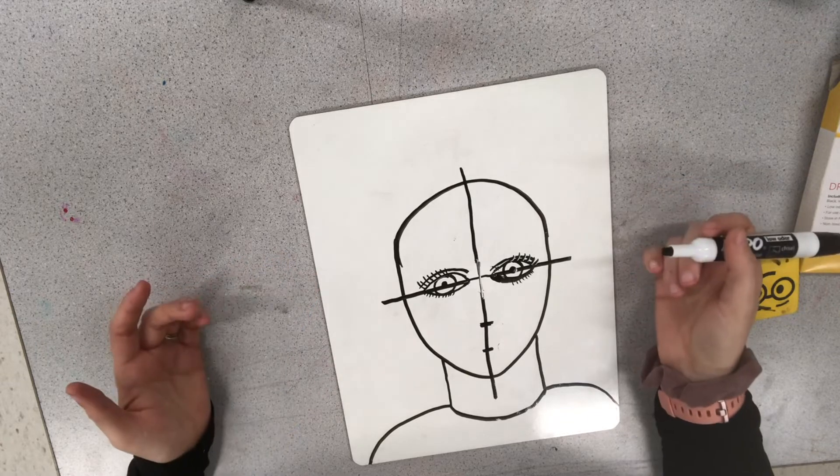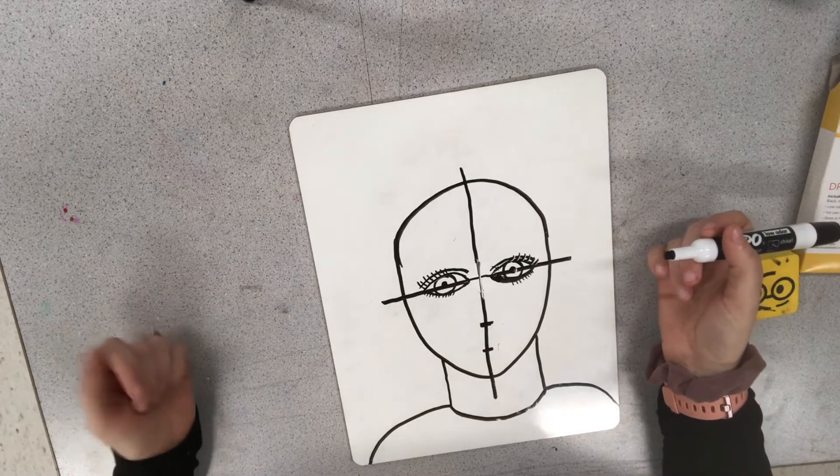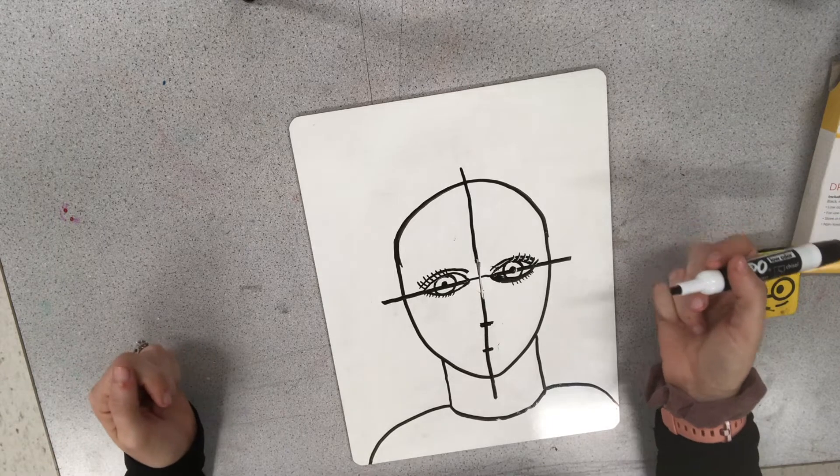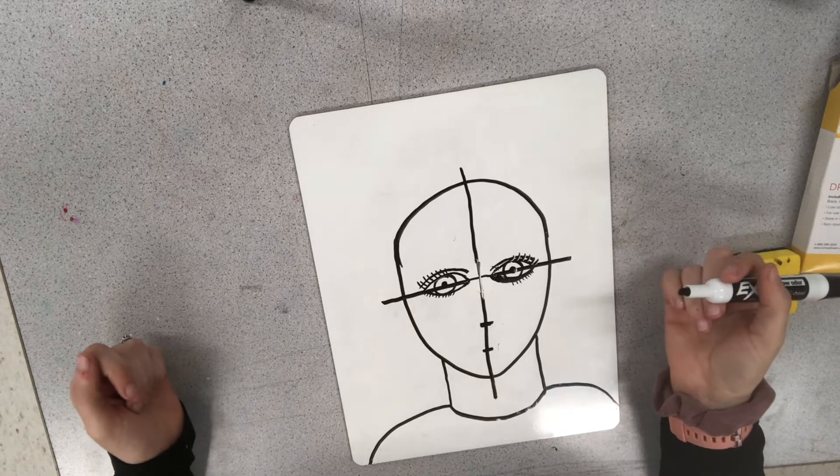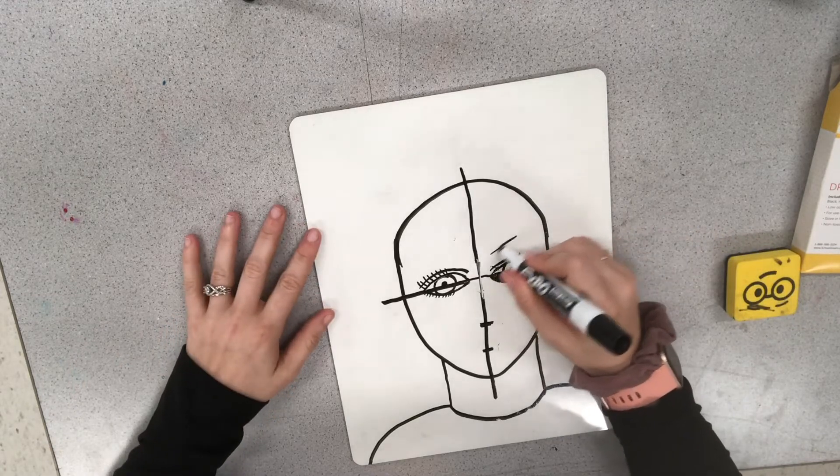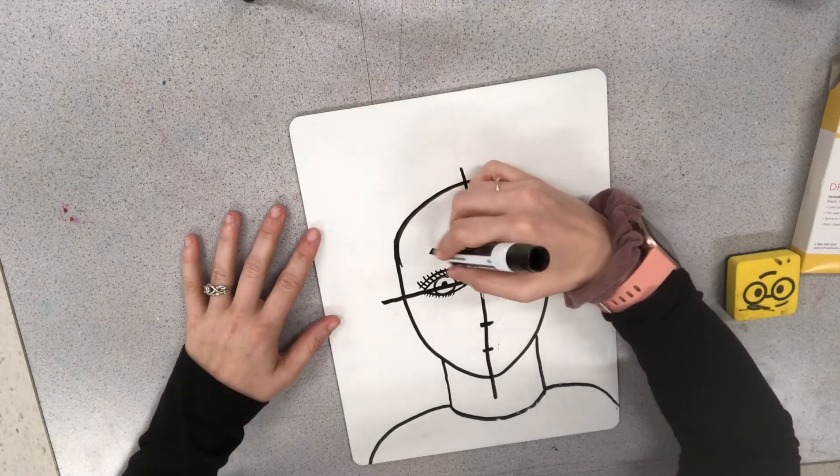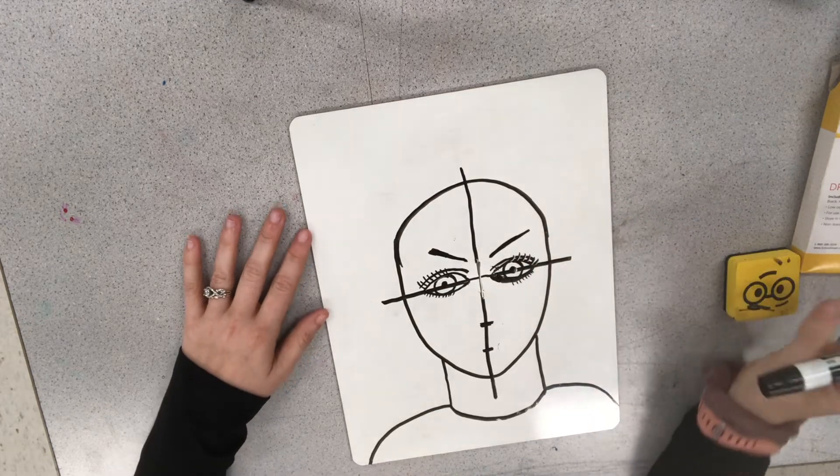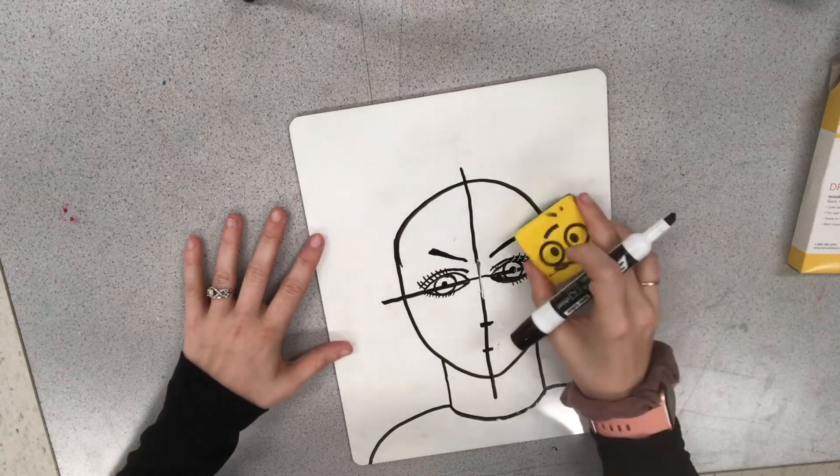Now another thing we want to add to our eyes up here is we want to add in some eyebrows. And I'm going to show you a few different ways to make eyebrows. Eyebrows are really important for showing expressions on people. So sometimes you're making a portrait of someone who is angry. So the eyebrows might be kind of more down like this. So that makes it instantly look a little angry.